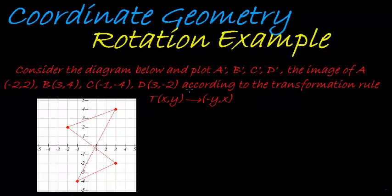Consider the diagram below and plot A', B', C', and D', the image of A which is (-2,2), B which is (3,4), C and D according to the transformation rule. Now what I'm going to do is first plot the points, connect them in order, and then we'll decide on what type of rotation it was.